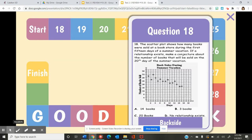Number 18. The scatterplot below shows how many books were sold at a bookstore during the first 15 days of a summer vacation. If a relationship exists, make a conjecture about the number of books that will be sold on the 20th day of the summer vacation. So this is asking us to find out how many books will be sold on the 20th day.